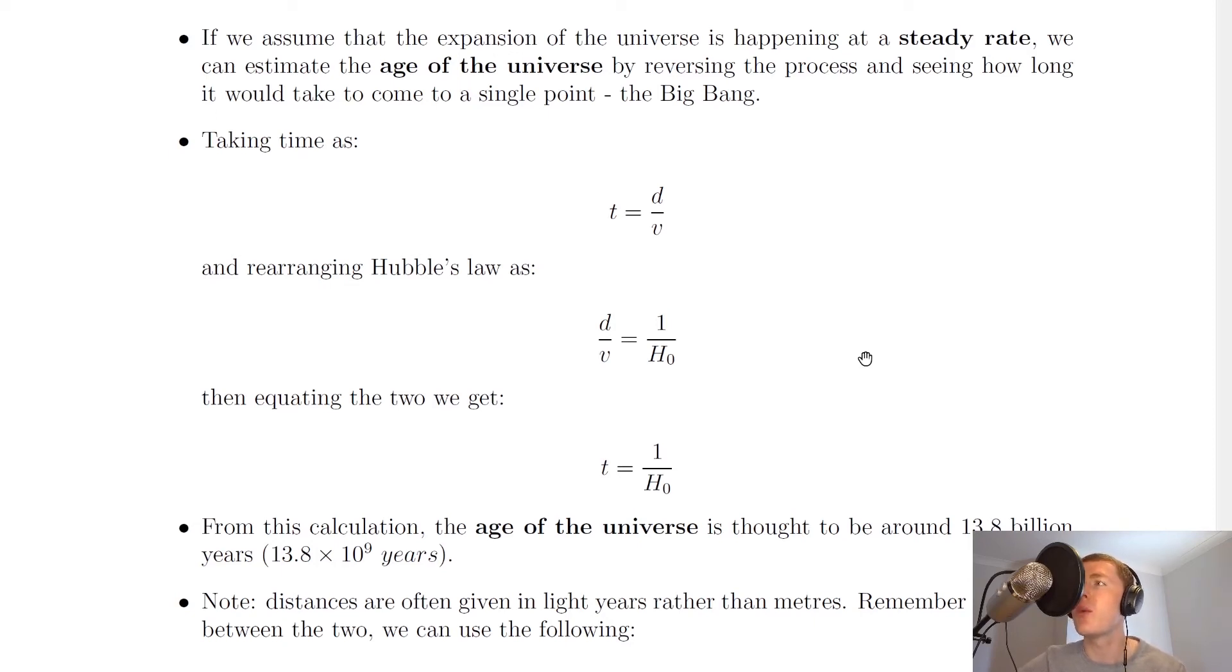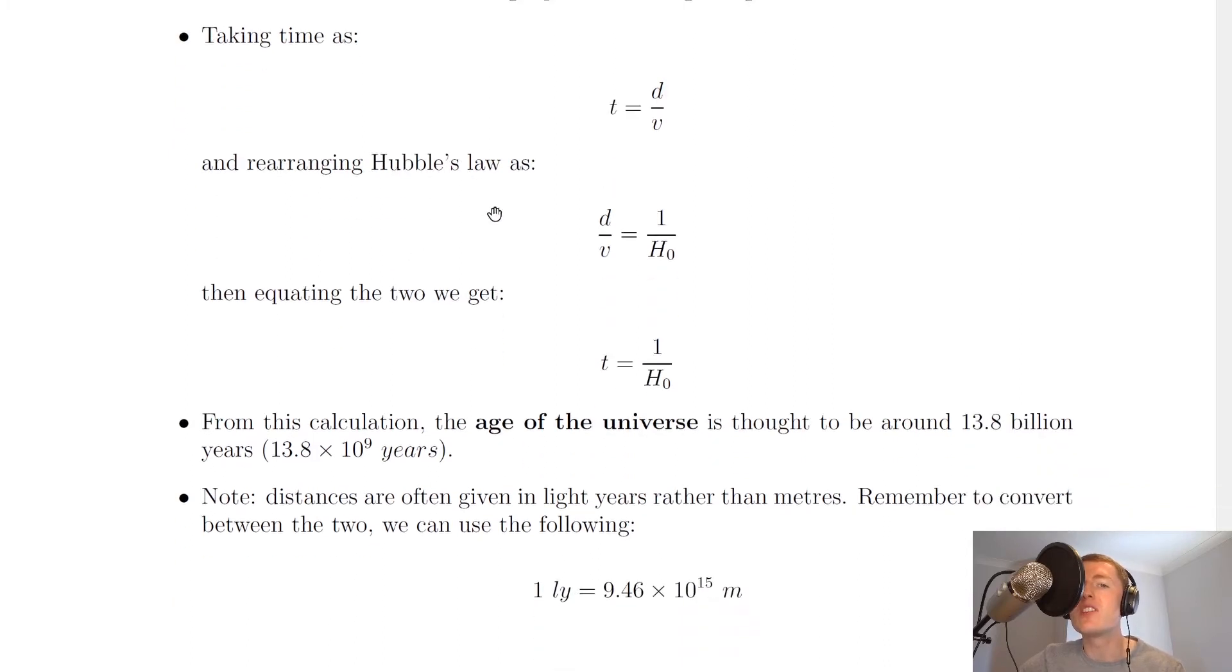Going back to the notes, we can actually work out a value for the age of the universe using two equations which we've already seen. Taking time as t equals d over v, the first equation is just our classic speed-distance-time rearranged. And rearranging Hubble's law, which we know as v equals H₀d, to d divided by v equals 1 over H₀.